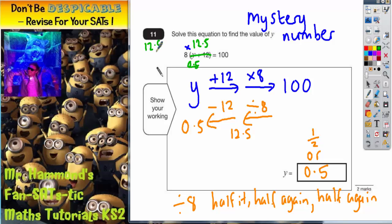So 12.5 times 8. 8 fives are 40, put the 0 in, carry the 4 underneath. 8 twos are 16, plus that 4 is 20, put the 0 in, carry the 2 underneath. 8 ones, or 8, plus the 2 is 10. Make sure your decimal point goes in, so that says 100.0. So indeed, the y value has got to be 0.5. That's the only way of getting back to 100. So y equals 0.5, or y equals a half, is correct.